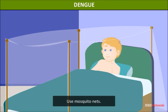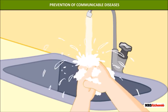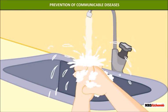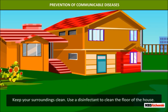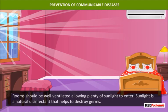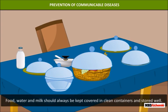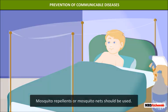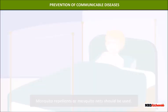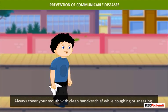Spread of communicable diseases can be prevented by following some simple measures: maintain personal hygiene, keep your surroundings clean, use a disinfectant to clean the floor, ensure rooms are well ventilated with plenty of sunlight, as sunlight is a natural disinfectant. Food, water, and milk should always be kept covered. Children suffering from a communicable disease should stay away from school till fully recovered. Use mosquito repellents or nets, and always cover your mouth with a clean handkerchief while coughing or sneezing.